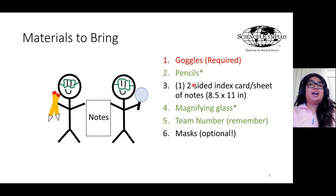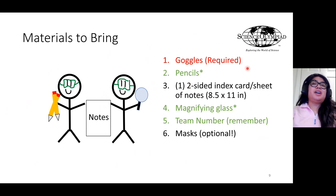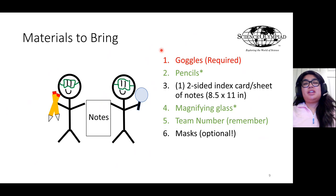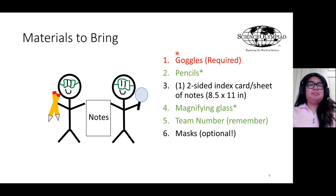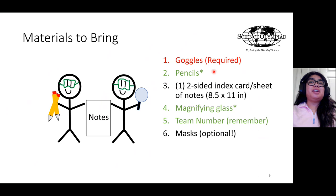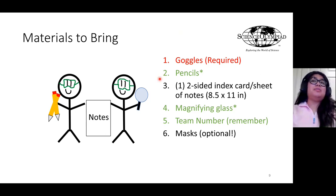Materials to bring to either the practice event or the actual tournament: please make sure each student has goggles — if it's a team of two, each of them needs goggles — because we don't want anything getting into their eyes. Even though these are household products, we want them to be safe. If either student doesn't appear with goggles, they will not be permitted to compete. Also make sure they have at least two pencils per team, preferably more, because one pencil will be dedicated to the chromatography portion.